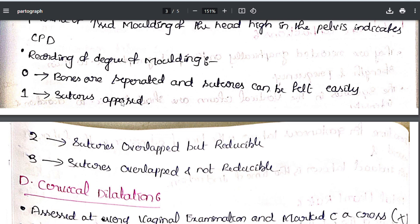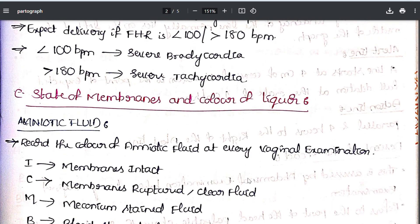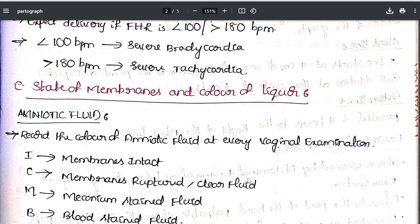Molding grading: 0 means sutures are apposed; 1 means sutures are touching; 2 means sutures overlap but are reducible; 3 means sutures are overlapping and not reducible. This is the state of membranes and molding component of the partograph.